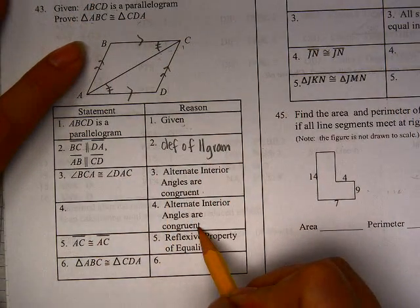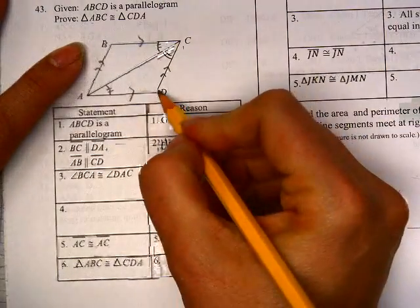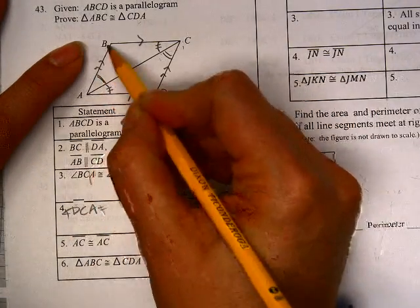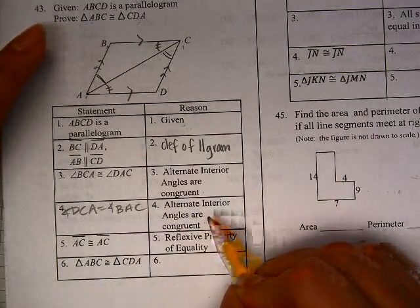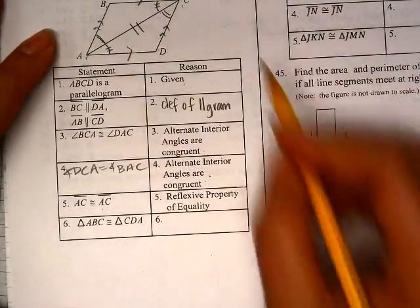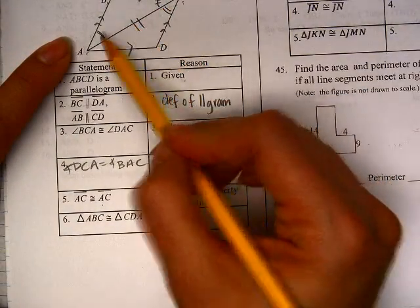So then we have alternate interior. So we have BCA and BAC for those guys. And we can also get the other dudes. So this little dude here, DCA, and this little dude here, BAC, are also alternate interior. And the line segments are equal because they're reflexive. And they are congruent by looking at the picture ASA.